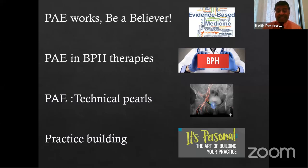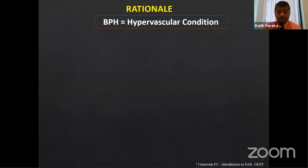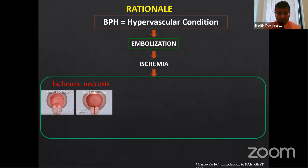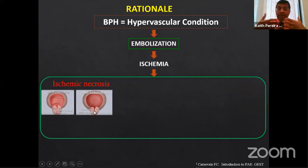Practice building is something Dr. Gupta spoke about earlier — how to start getting patients. It's been very challenging for everybody; a lot of practices in the US are still struggling, and Europe is actually doing a little better. Now, the rationale for PAE: surprisingly, BPH is a hypovascular condition. When you perform embolization, you get ischemia, and that causes ischemic necrosis — the enlarged prostate shrinks and the urinary passage opens up.